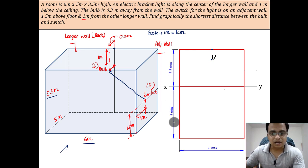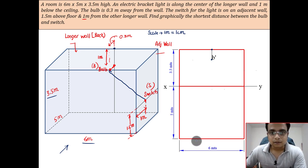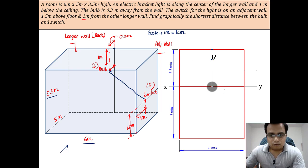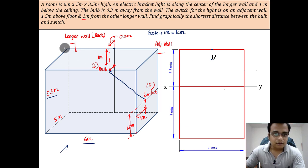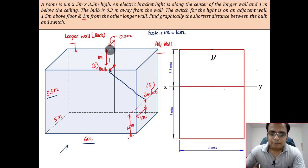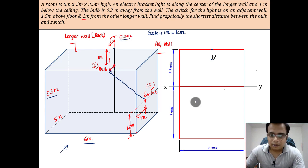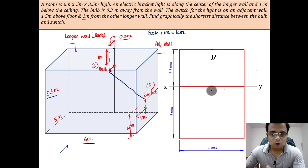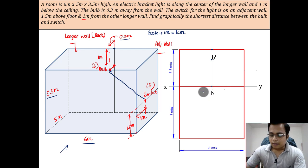So 3.5 meters will be 3.5 centimeters, and 5 and 6 meters will be represented by lines of 5 and 6 centimeters respectively. Now let's make the top view of the bulb. Somewhere along the same projection line from the top you are going to see this 5 by 6 roof. From the center line, the bulb is 0.3 meters in front of the back wall — that is 0.3 centimeters, or 3 millimeters on the drawing sheet. That's the top view of the bulb.